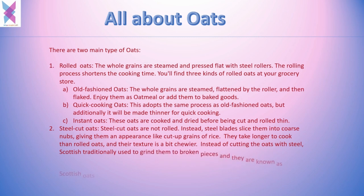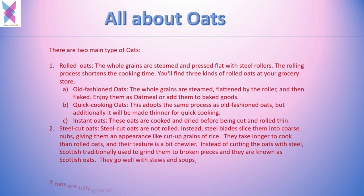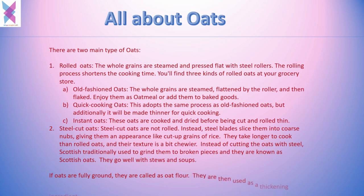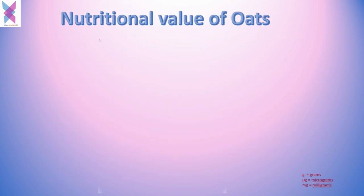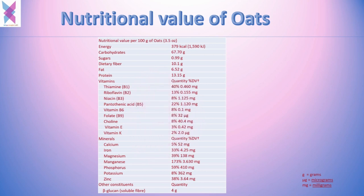Steel-cut oats are not rolled; instead, steel blades slice them into coarse nubs, giving them an appearance like cut-up grains of rice. They take longer to cook than rolled oats and have a chewier texture. Scottish oats are traditionally ground into broken pieces and go well with stews and soups. If oats are fully ground, they are called oat flour, which is used as a thickening ingredient in stews and soups.